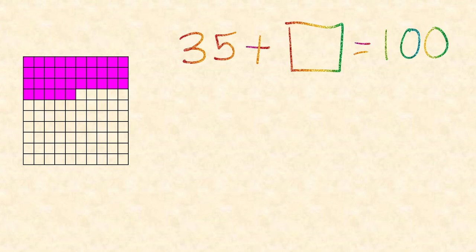So I already had 35. How many more do I need to make 100? Let's count. I'm just going to ignore the 35 and count the rest. So there's 10 here, 20, 30, 40, 50, 60. There's 60 and another 1, 2, 3, 4, 5. 60 plus 5 is 65. That means 35 plus 65 equals 100.